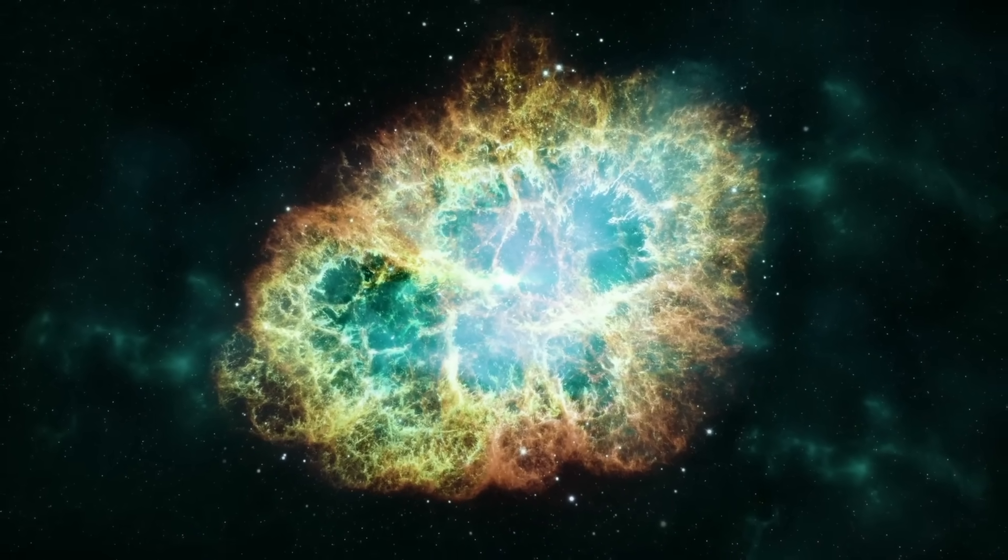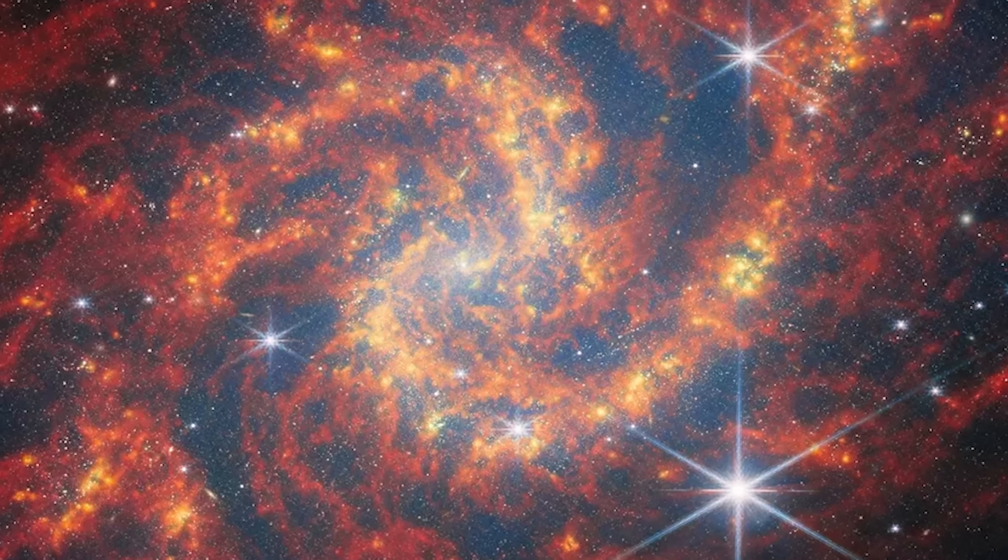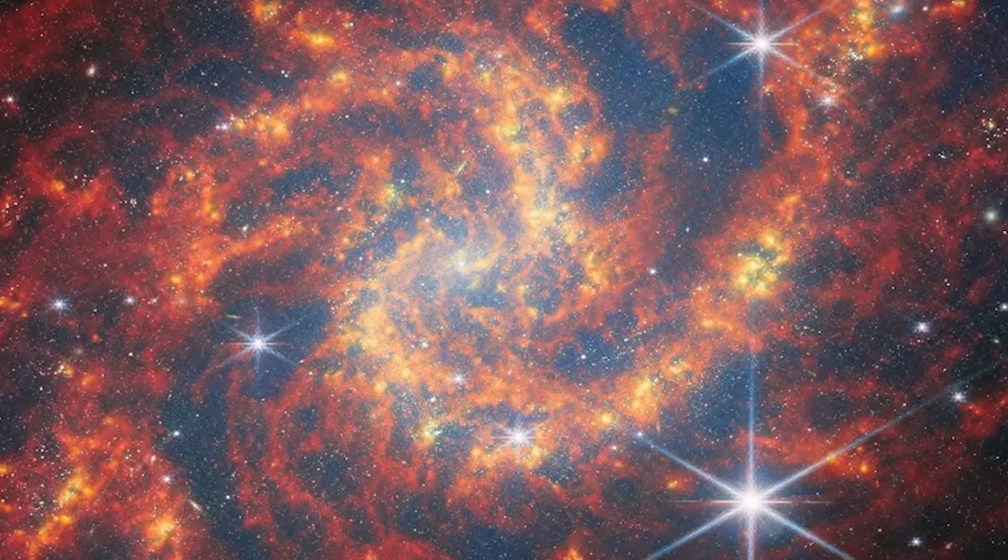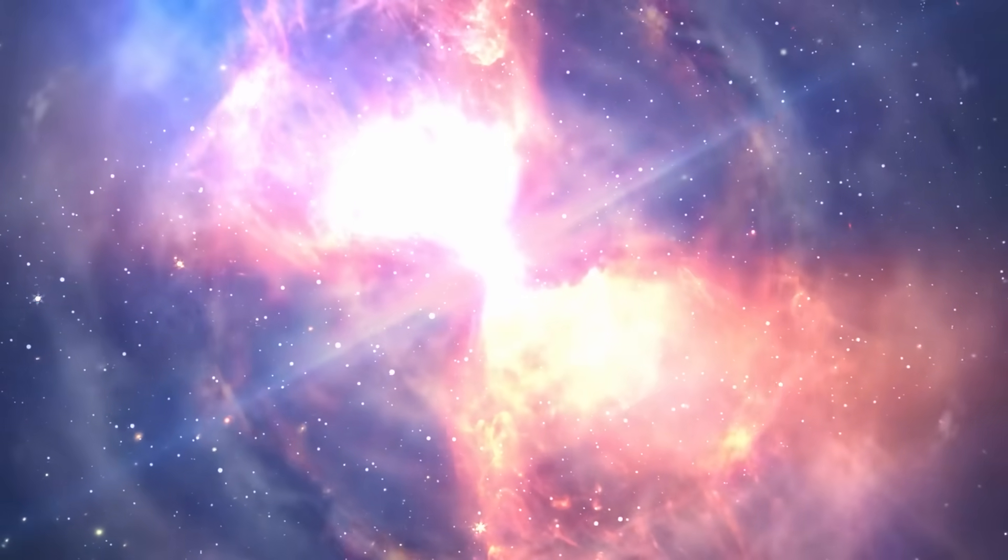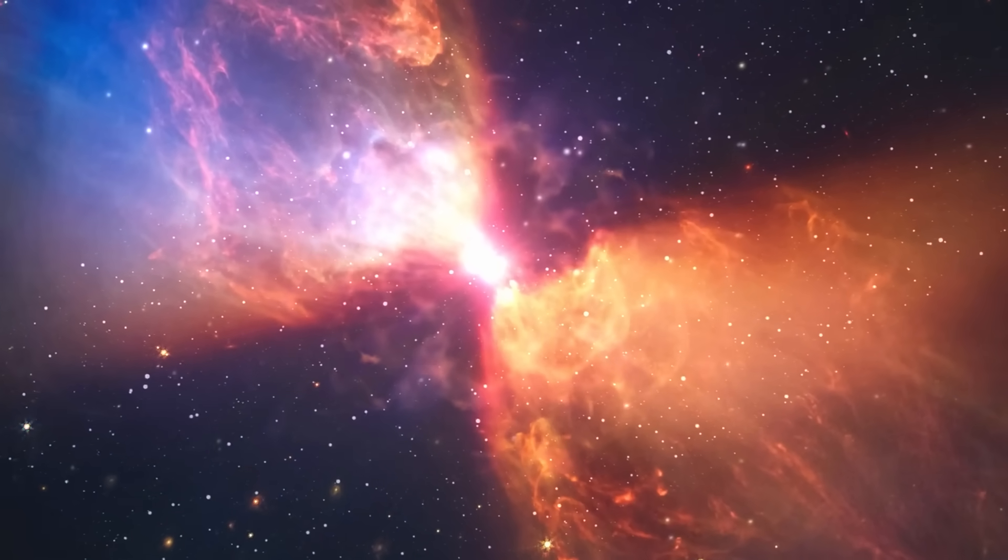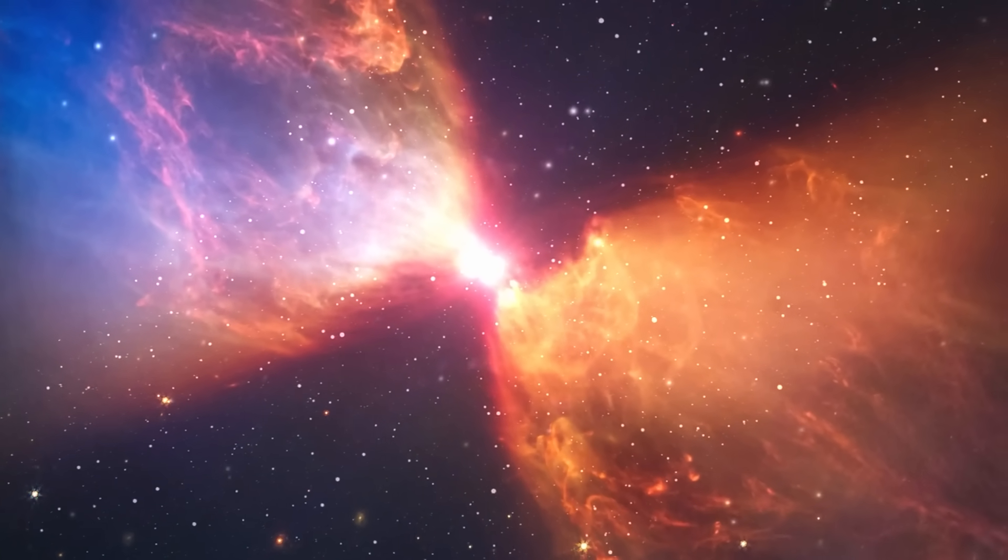Speaking of supernovas, NGC 2283 is home to one called SN 2023AXU, a type 2 supernova. This happens when a giant star, at least eight times the size of the sun, collapses and explodes. This explosion is so powerful that it can trigger the birth of new stars from the debris, adding more gas and elements to the galaxy. Webb's infrared cameras captured this entire process, giving us some stunning images.